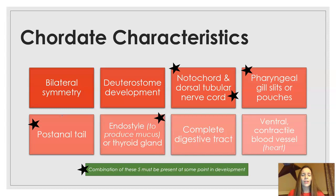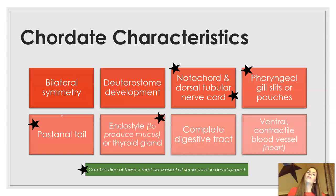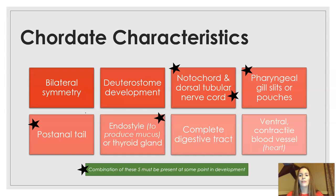Now we have phylum chordata — some chordate characteristics. There are lots of things chordates have in common, and you'll notice five key characteristics marked. A combination of these five things must be present at some point in development for an organism to be classified as a chordate: a notochord, a dorsal tubular nerve cord, pharyngeal gill slits, a post-anal tail at some point in development — yes, even humans have a post-anal tail during development — and an endostyle or thyroid gland. Chordates also share bilateral symmetry, deuterostome development, a complete digestive tract, and a ventral contractile blood vessel, a.k.a. a heart, in most organisms.